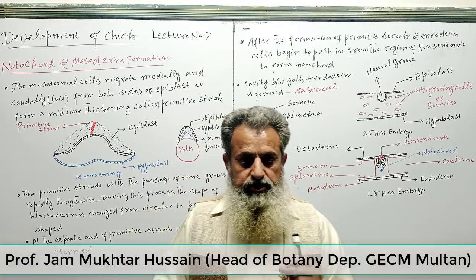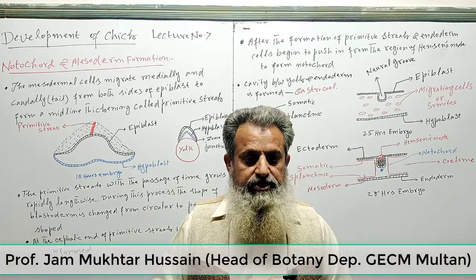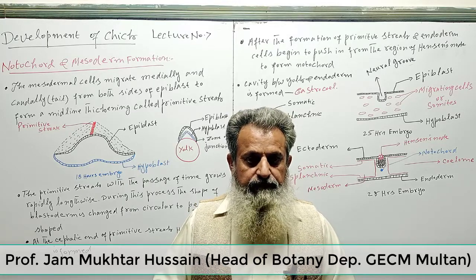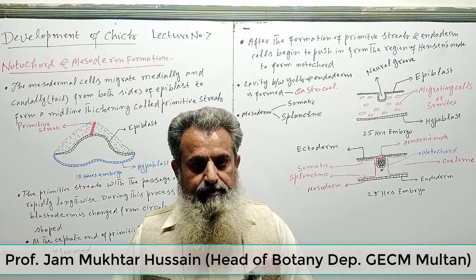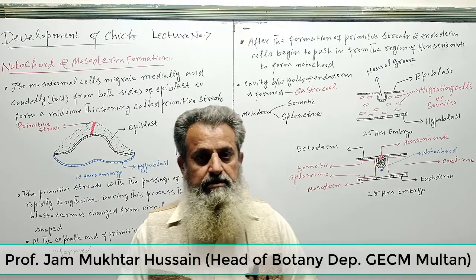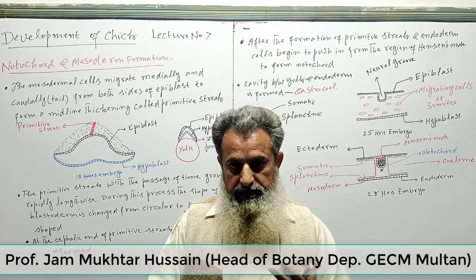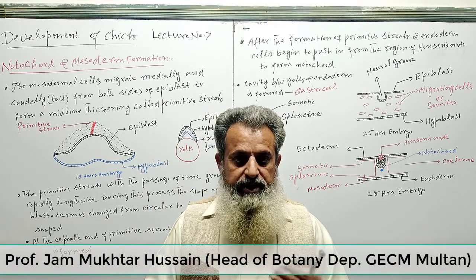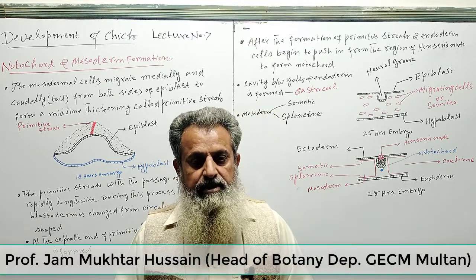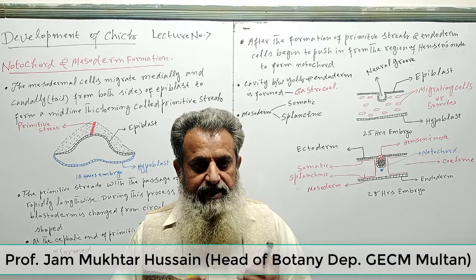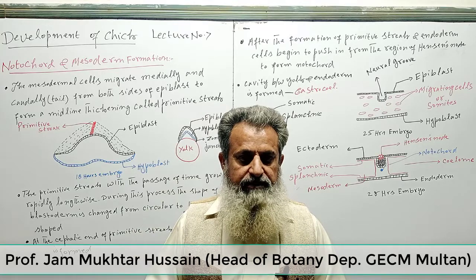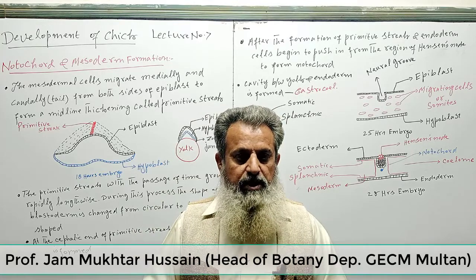The structure is known as the germinal disc or blasto disc. The first change occurs at the germinal disc or blasto disc. We have a cleavage process, which means two cells are made from the blastomere. Those two cells divide into four cells, and then further divisions occur.